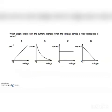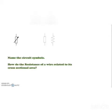Which graph shows how the current changes when the voltage across the fixed resistor is varied — options A, B, C, or D? The correct option is A.